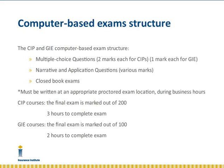Now we will give you a tour of the exam structure and site locations. The computer-based exam structure will remain fairly consistent with the current paper-based exam structure. The exam will consist of both multiple-choice questions — worth two marks each for every CIP course and one mark each for the GIE courses — as well as narrative and application questions worth various marks that are clearly defined within the exam. The exams are taken in a proctored, closed-book environment, and you will have three hours to complete your CIP exams with a final mark out of 200.